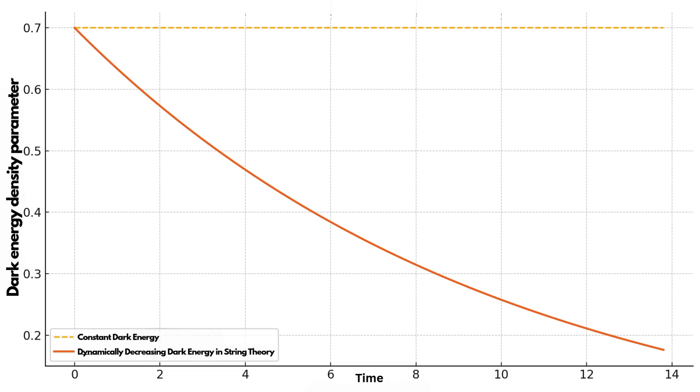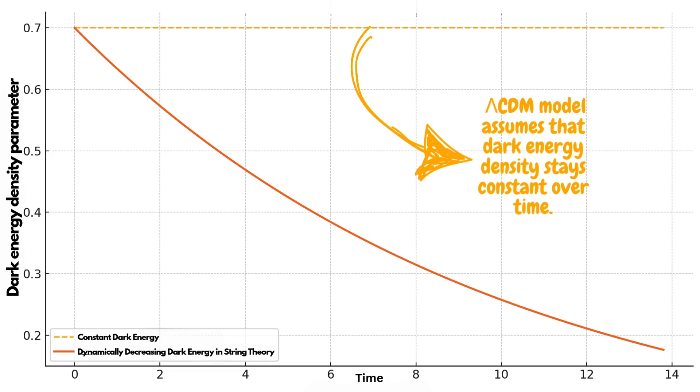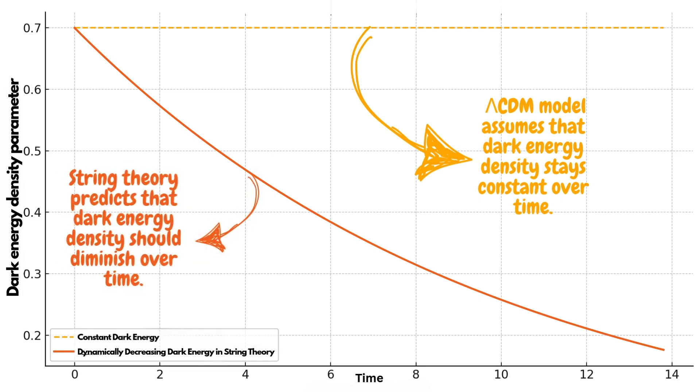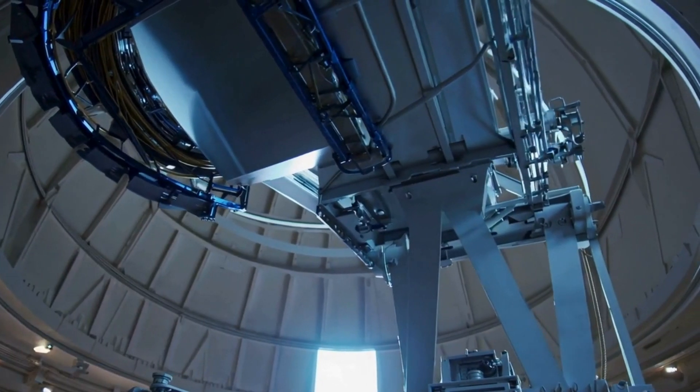The graph you see on the screen summarizes this conflict clearly, showing how these two theories differ across the history of the universe, from the earliest times to today. The Lambda-CDM model, which is the widely accepted framework in cosmology, assumes that dark energy is constant. String theory, on the other hand, says the opposite. Dark energy is not constant. It decreases over time.